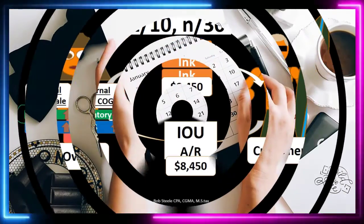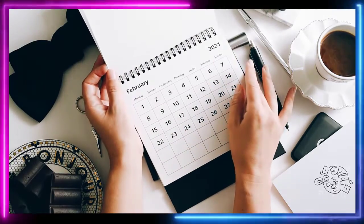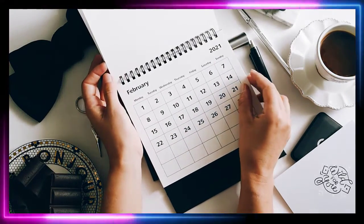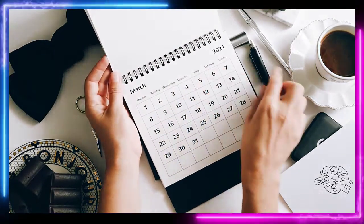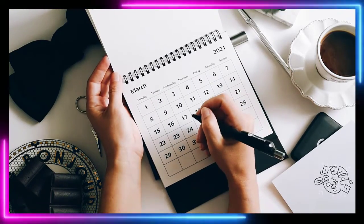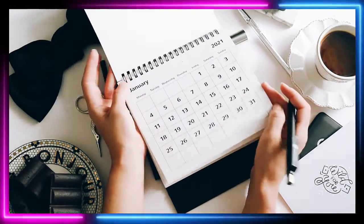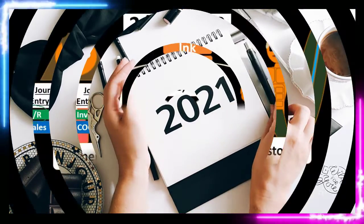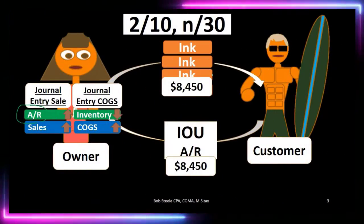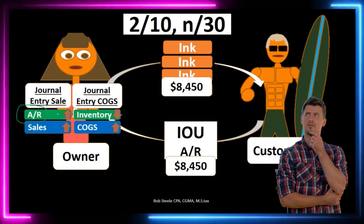The terms could be as simple as expecting payment within 30 days — that's when we expect to be paid for the transaction that took place today on account. Or it could be some more complex type of terms. What we're looking for is when payment will be received, meaning when are we going to receive the cash related to this accounts receivable?